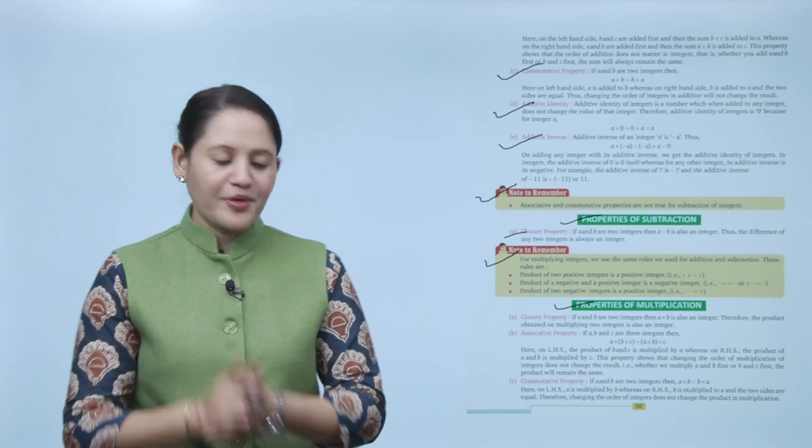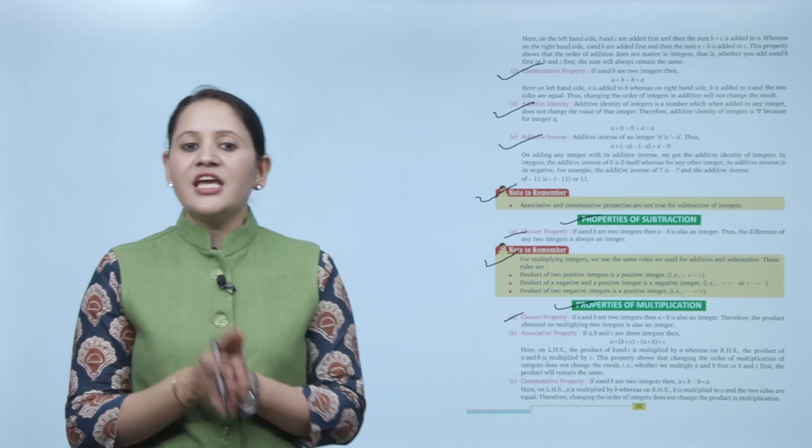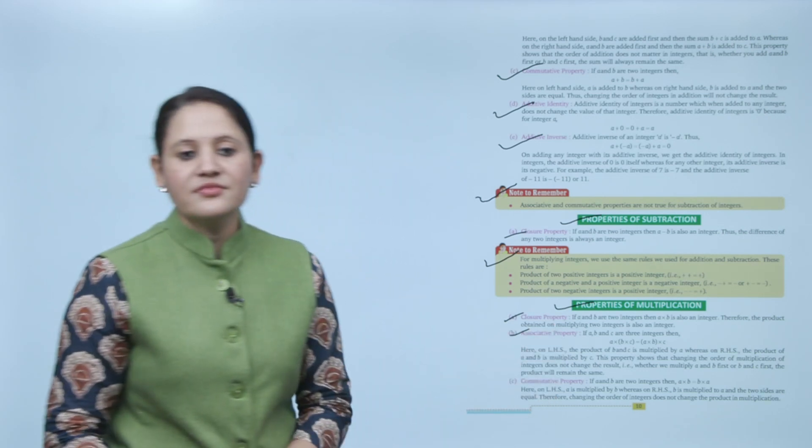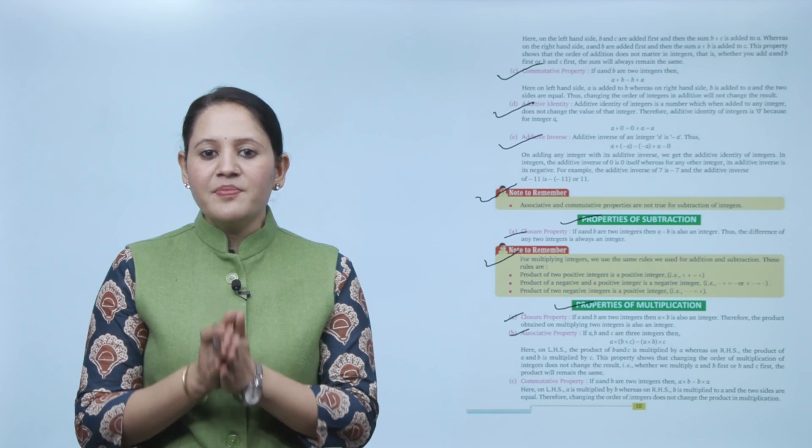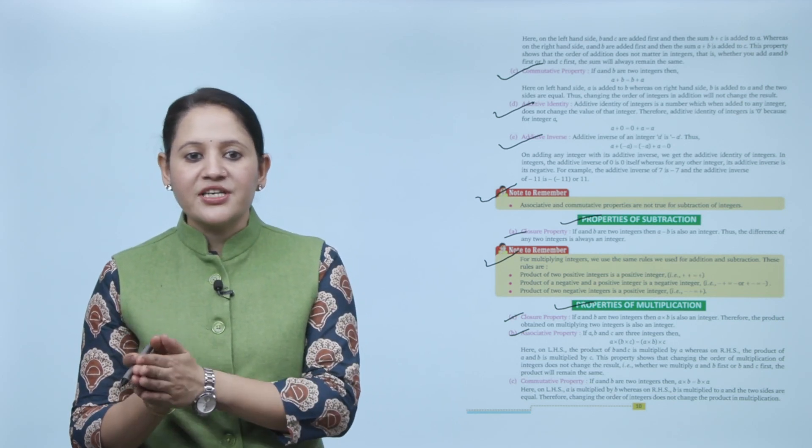Next, properties of multiplication. The first property is the closure property: if a and b are two integers, then a multiplied by b is also an integer — therefore the product of two integers is also an integer. Next, associative property: if a, b, and c are three integers, then a times (b times c) equals (a times b) times c. On the left-hand side the product of b and c is multiplied by a; on the right-hand side the product of a and b is multiplied by c. Changing the order of multiplication does not change the result.